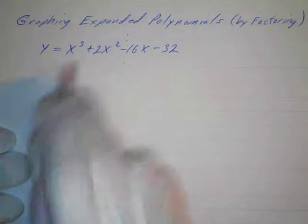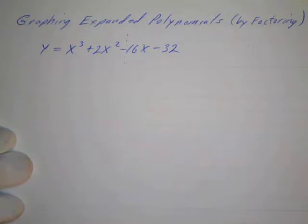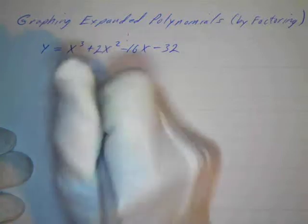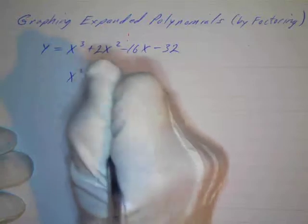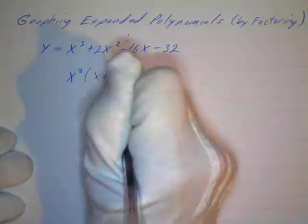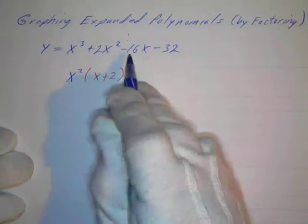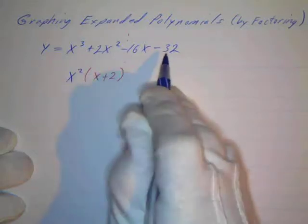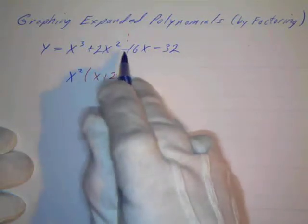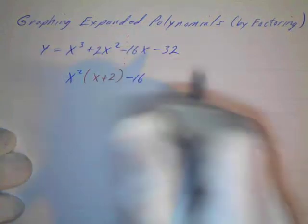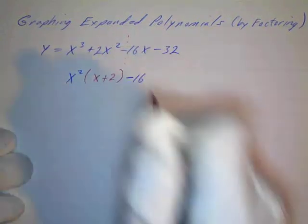So out of these first two terms, I'm going to take out an x squared, and what's left in the first term I have an x, and plus a 2 in the second term. Now out of these two terms, and remember we always talked about this before, when we have a four-term grouping we always factor out the leading sign.